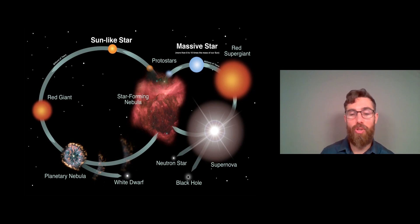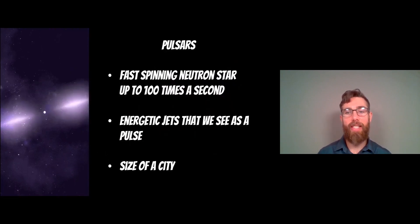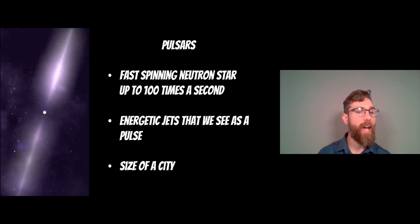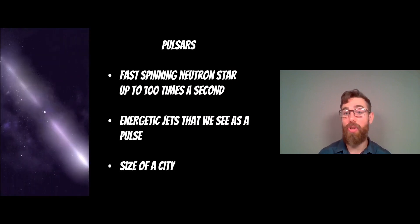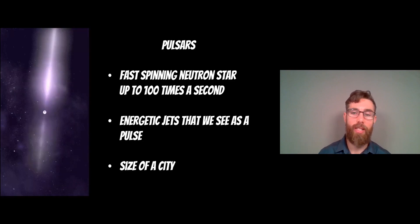A pulsar is a neutron star; it's just the way we see it mostly. Pulsars are generally fast-spinning neutron stars. These can spin up to a few hundred times a second, so these are incredibly fast rotating objects.